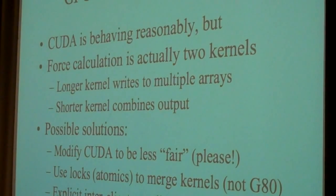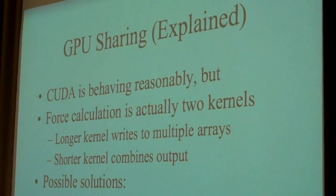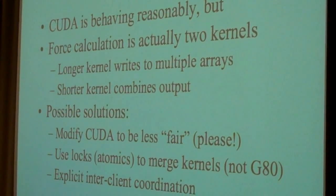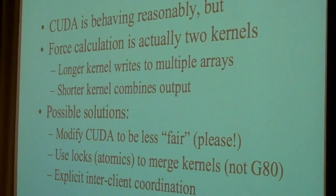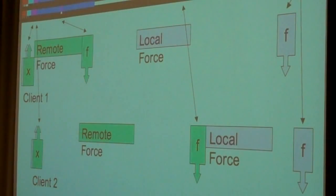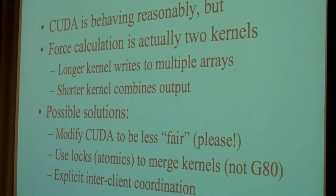I stared at this for a while and finally realized what was happening. Those force calculations are not one kernel invocation, so they're not atomic as far as the GPU is concerned. We're calculating forces, and then summing the forces calculated by different blocks into a single array, breaking it up into two kernels. It's sort of random. There's some sort of fairness going on, but it's not what we want.